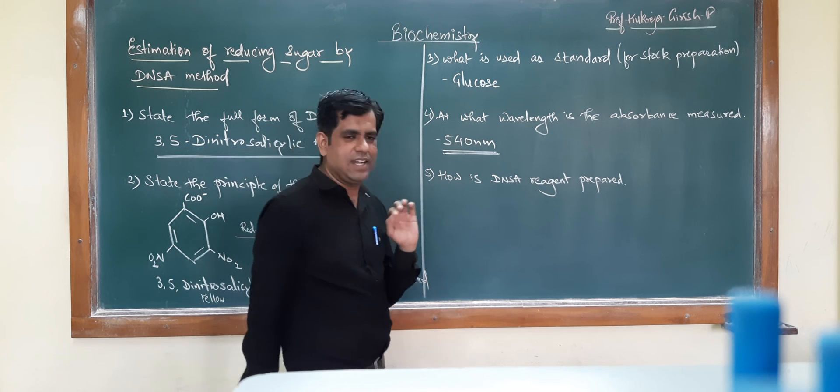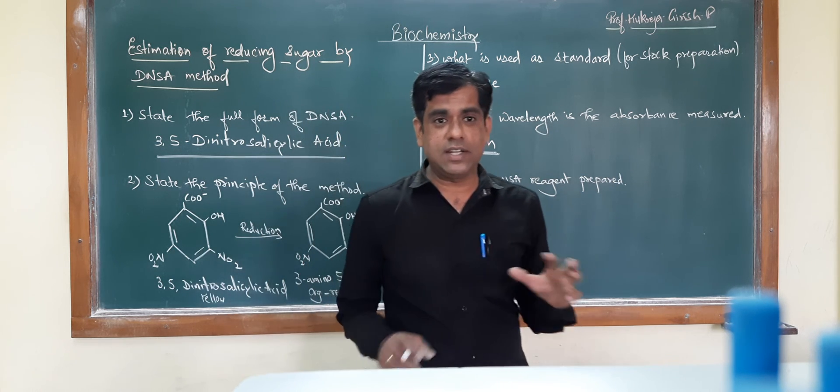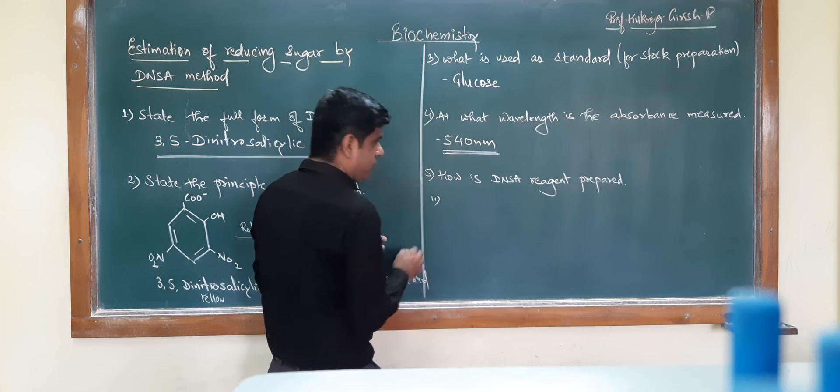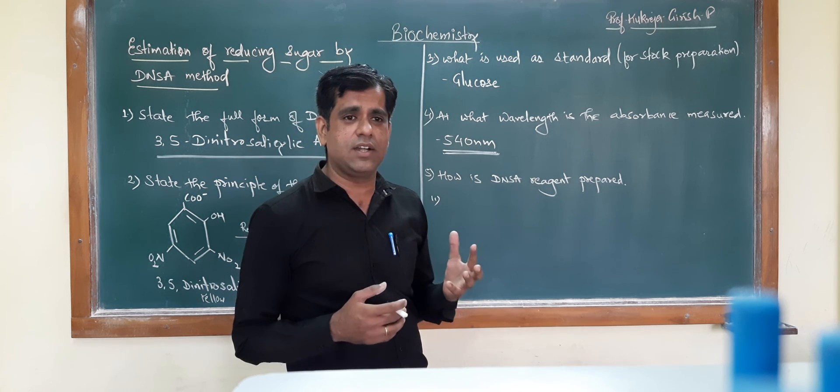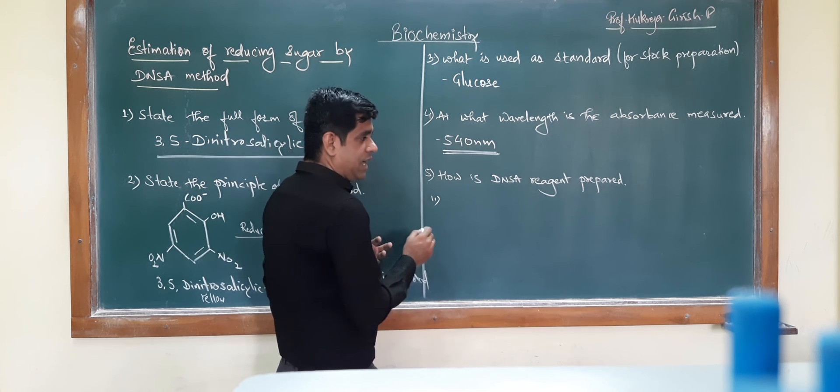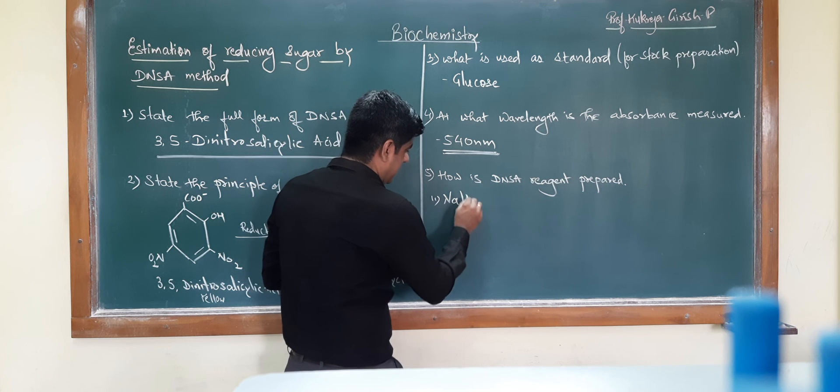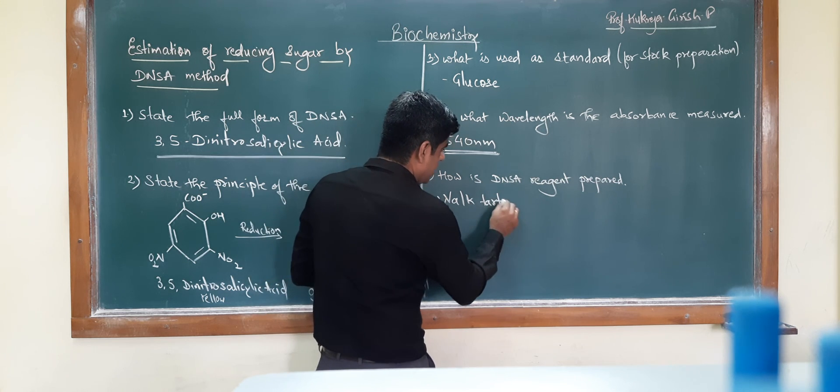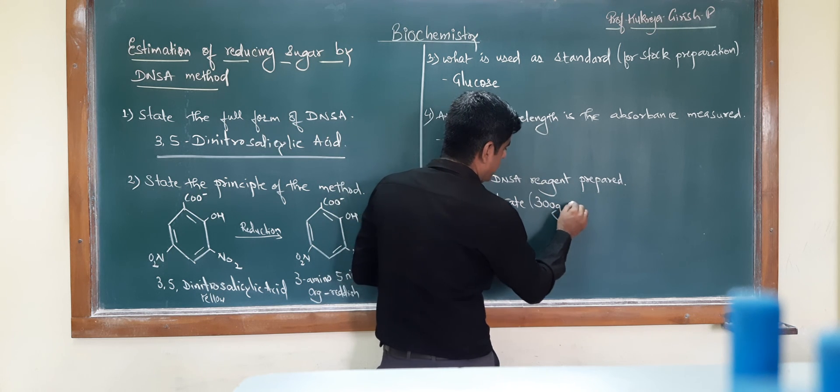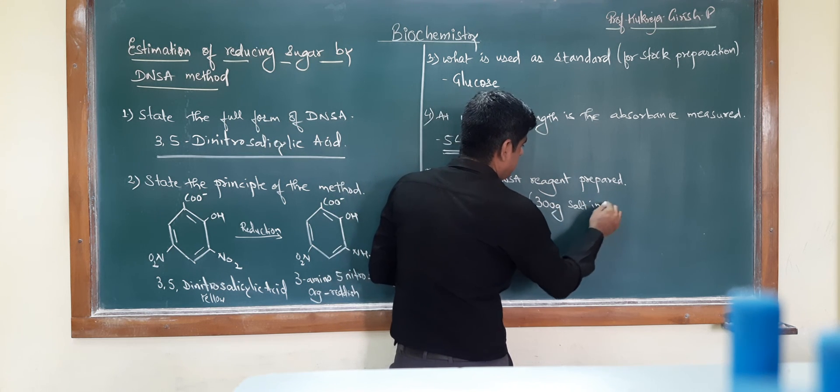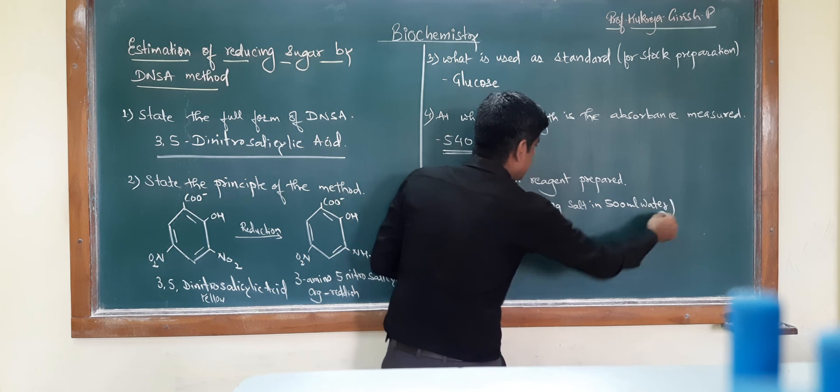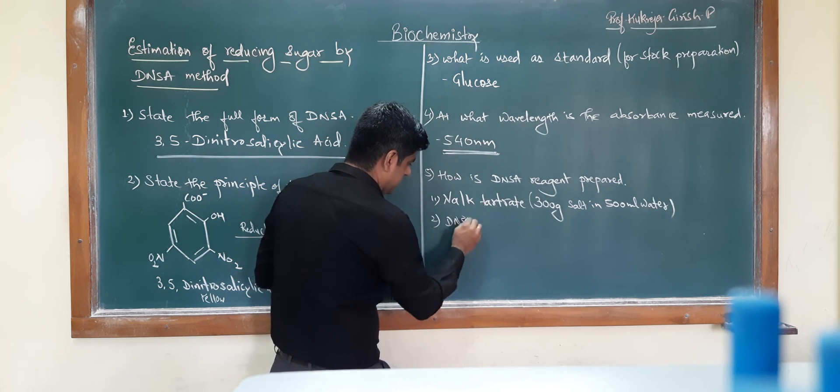Now, how is DNSA reagent prepared? If you look at the recipe of this particular reagent, it is basically made from sodium potassium tartrate, NaOH, and DNSA. Firstly, you prepare your sodium potassium tartrate reagent. For this particular sodium potassium tartrate, you dissolve 300 grams of this salt in 500 ml of water. This is the first step. Secondly, you will prepare your DNSA.